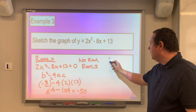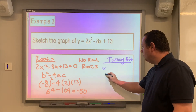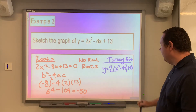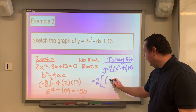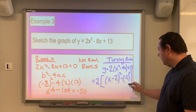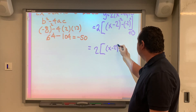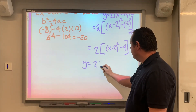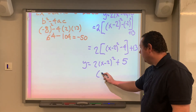Looking at the turning point now: we complete the square by taking 2 out as a common factor of the first two terms — 2(x squared minus 4x) plus 13. Completing the square inside: 2(x minus 2) squared, then subtract 2 squared, leaving plus 13 on the end. That gives 2(x minus 2) squared minus 4 plus 13, which simplifies to y equals 2(x minus 2) squared plus 5. So the turning point is (2, 5).